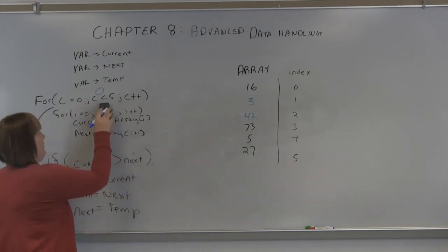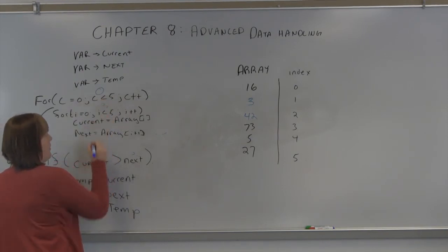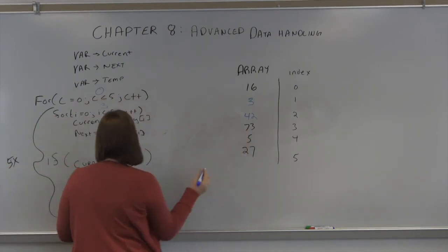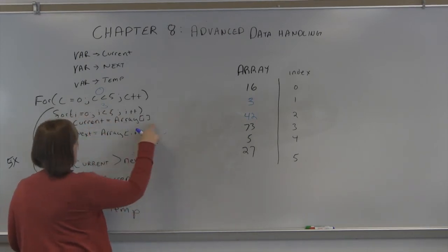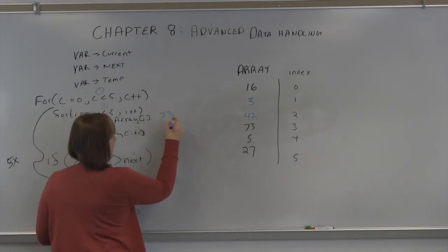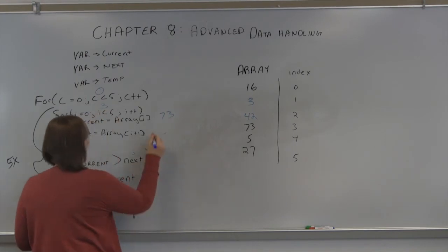So now the loop becomes, i becomes 3. 3 is 73. So current equals 73. Next equals 5.